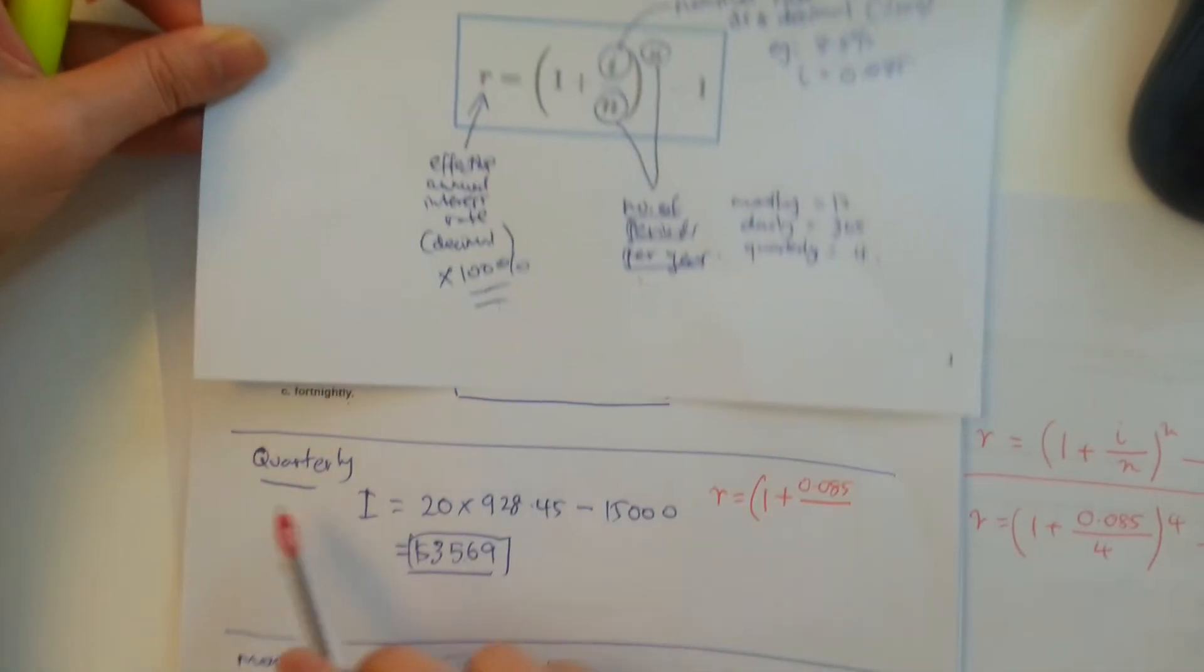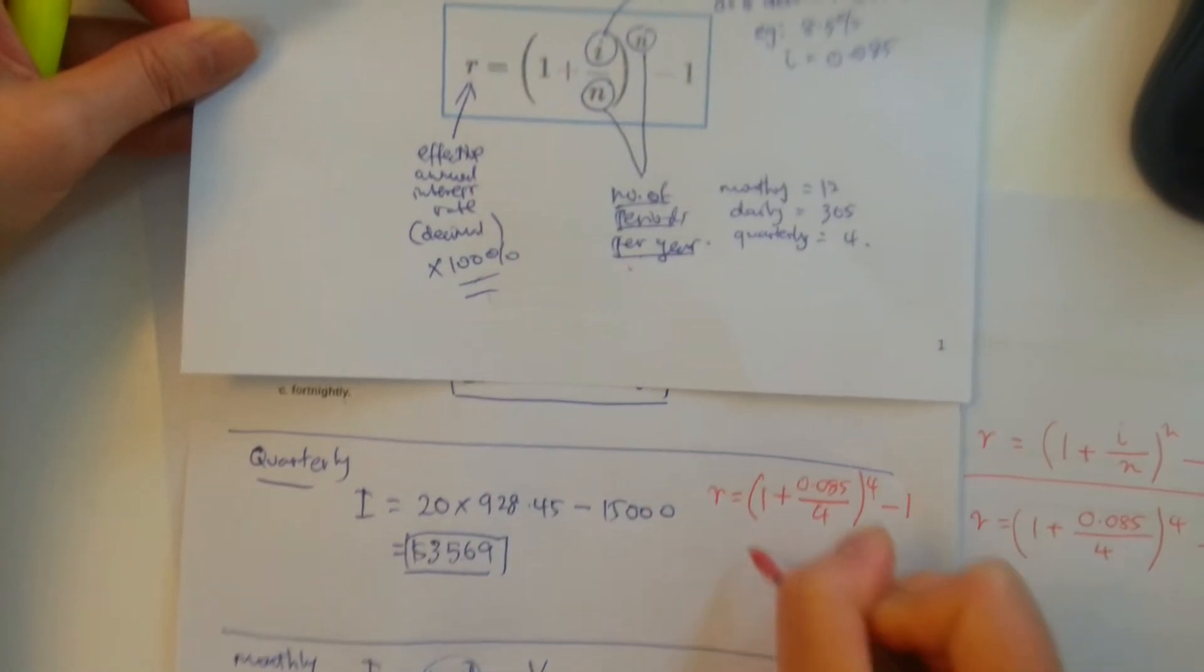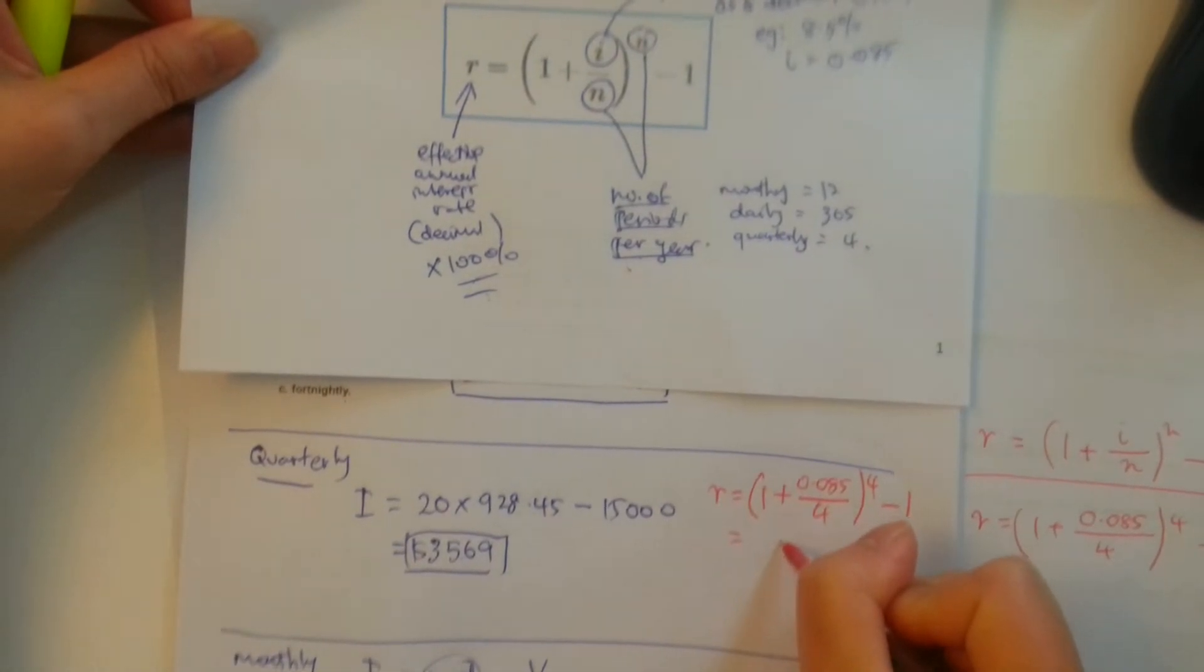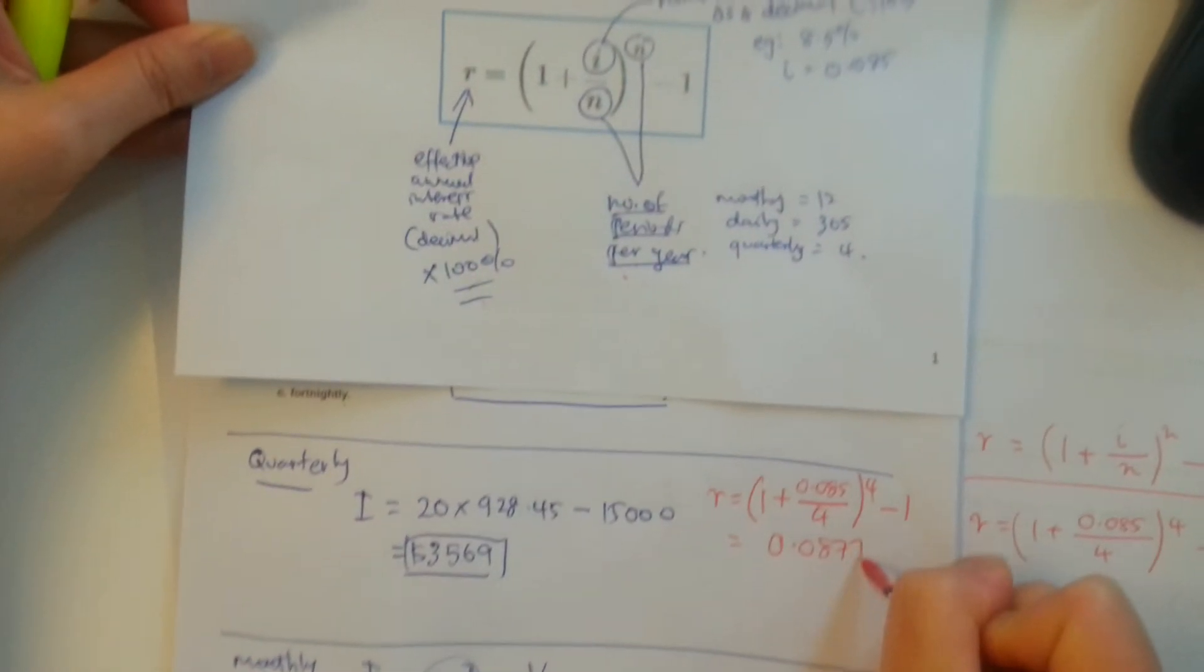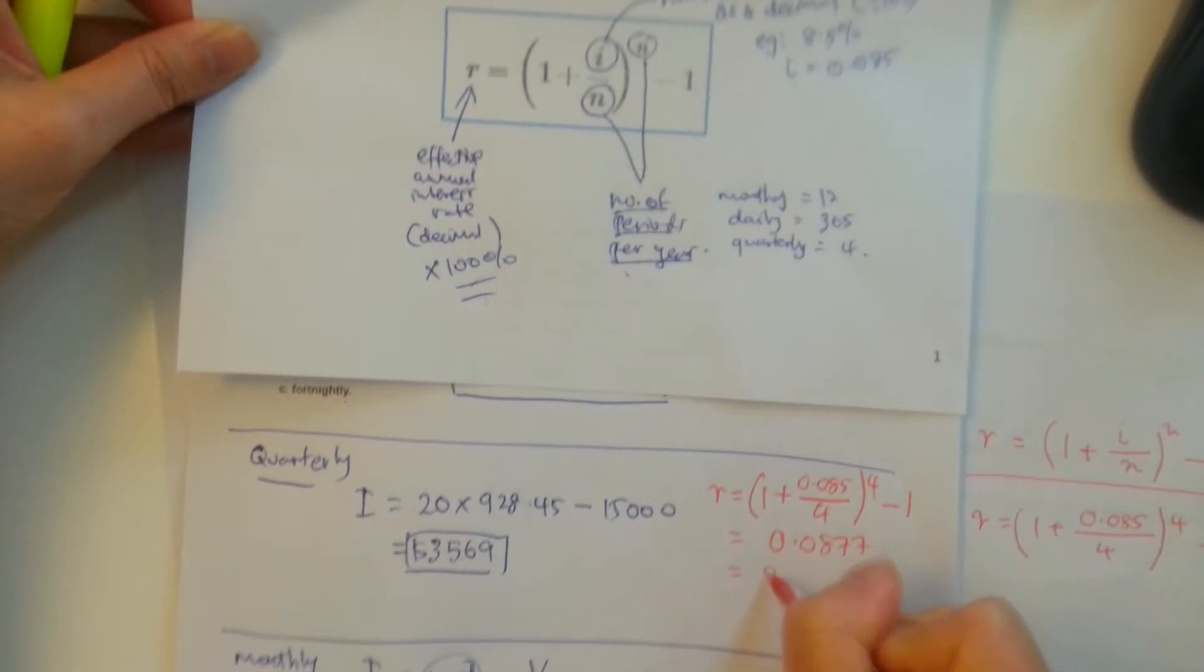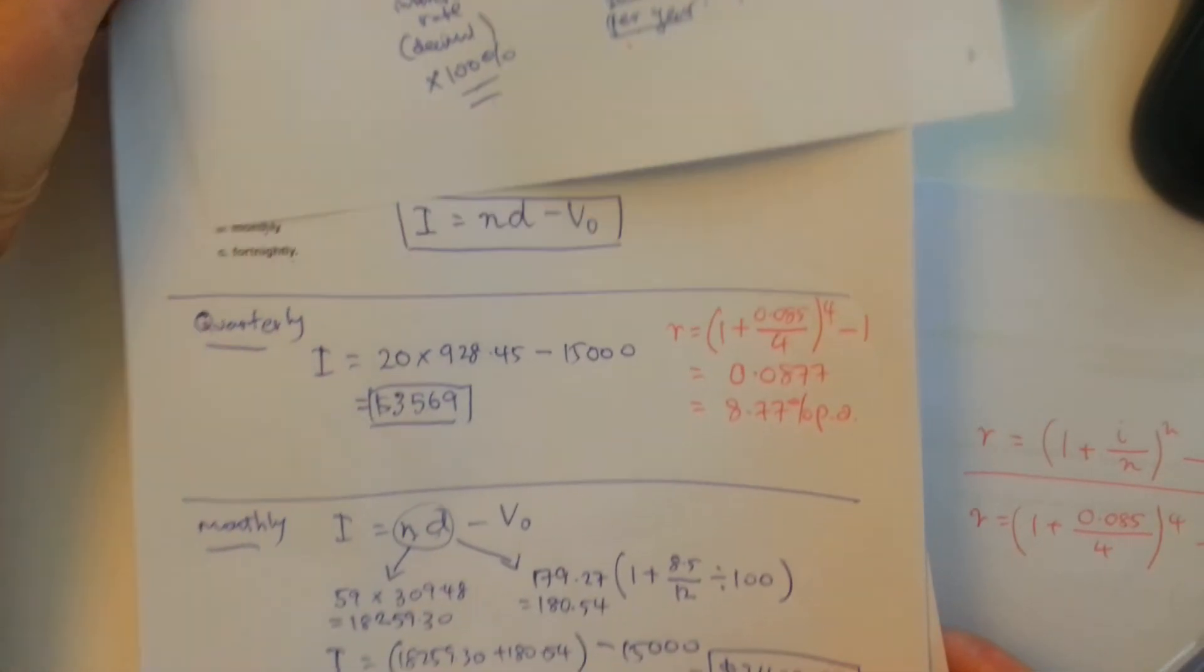quarterly means 4, to the power of 4 minus 1. And you should get an effective annual interest rate of 0.0877, which you will convert to 8.77% per annum. So that's for this example right here.